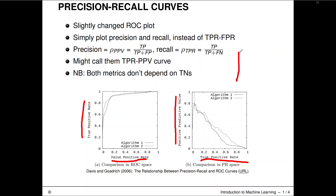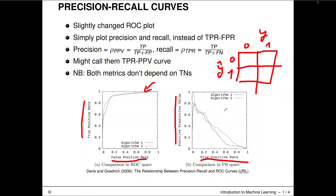Let's take a look at the confusion matrix. Here we have y-hat and true y, with the negative and positive classes. In a standard ROC analysis, we consider the true positive rate as a percentage within the positive column, and the false positive rate as a percentage within the negative column. In the precision-recall curve, we again use the true positive rate, but we also consider the positive predictive value — given that we predicted a one, it really is a one — which is a percentage within the predicted-positive row.